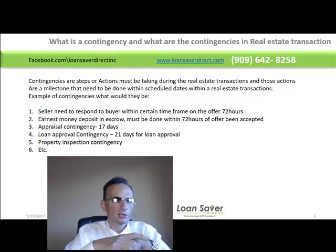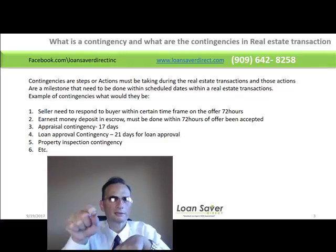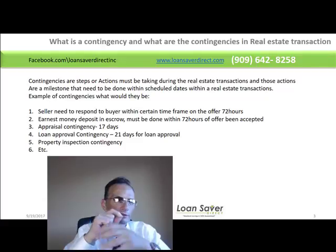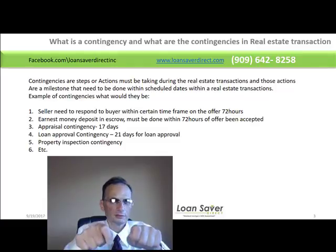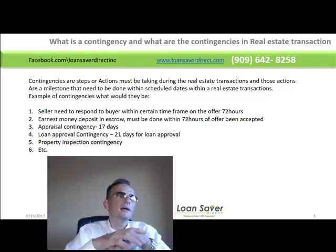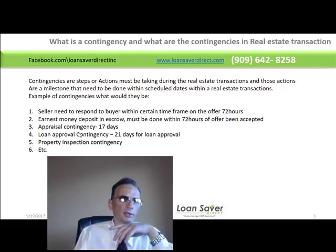These are what we call contingencies. A lot of times the seller wants to clear all contingencies to make sure that if something goes wrong in the transaction, the seller can take the escrow deposit. Once everything is signed off on the contingencies, the seller is entitled to three percent of the purchase price or sale price if the transaction doesn't go through.